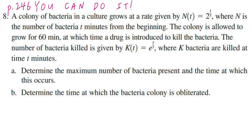Hi everyone, let's take a look at number 8 on page 246. A colony of bacteria in a culture grows at a rate given by N of t equal to 2 to the power of t divided by 5, where N is the number of bacteria t minutes from the beginning.